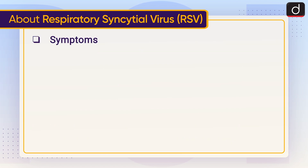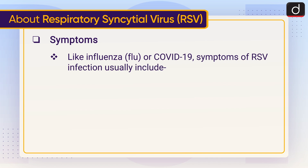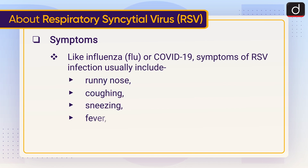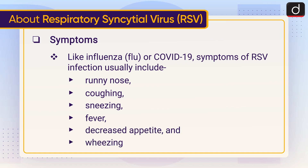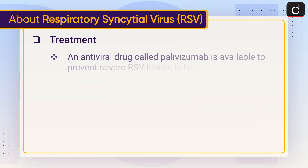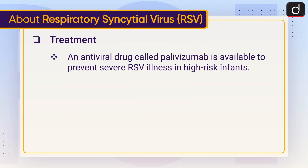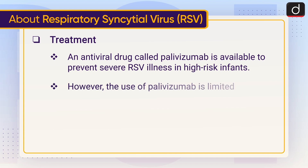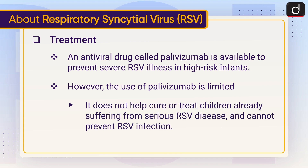Like influenza, flu, or COVID-19, symptoms of RSV infection usually include runny nose, coughing, sneezing, fever, decreased appetite, and wheezing. An antiviral drug called palivizumab is available to prevent severe RSV illness in high-risk infants. However, the use of palivizumab is limited — it does not help cure or treat children already suffering from serious RSV disease and cannot prevent RSV infection.